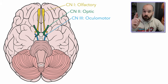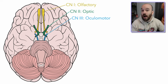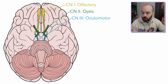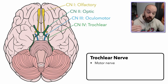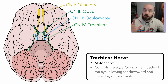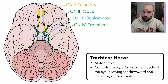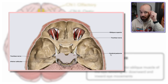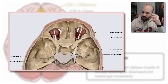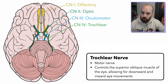The olfactory nerve is sensory for smell, the optic nerve is sensory for vision, and the oculomotor nerve controls most of our eye movements. There are two other nerves that control eye movements. The first of those is the trochlear nerve, which is another motor nerve. Specifically, it controls the superior oblique muscle of the eye — it runs forward then turns through a little pulley system, helping rotate the eye. Whenever you're looking downward or inward, the trochlear nerve helps with that movement.